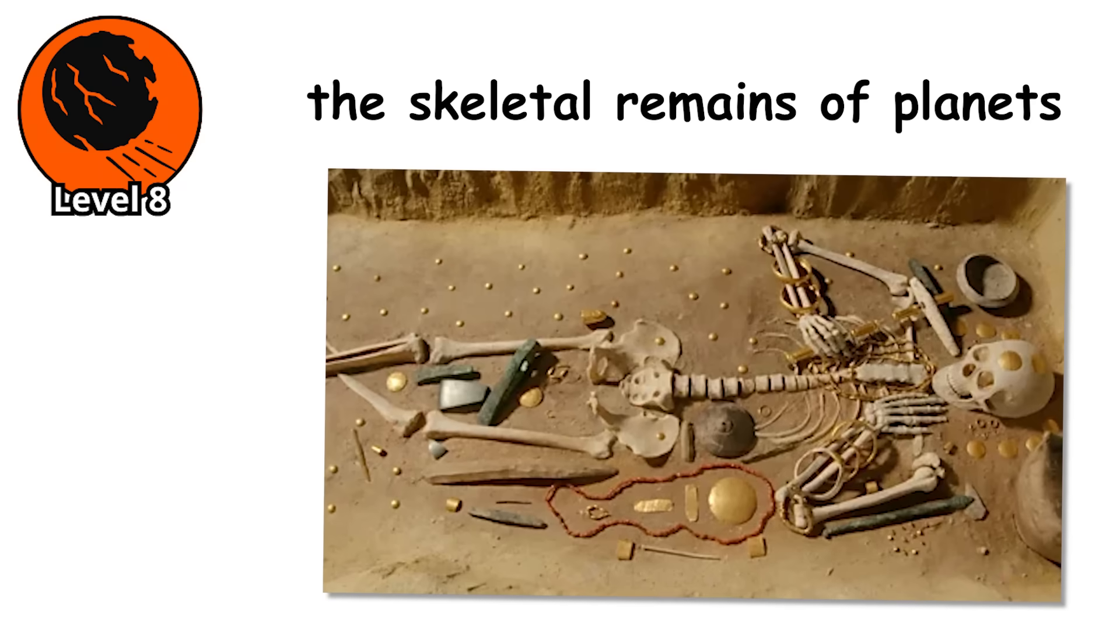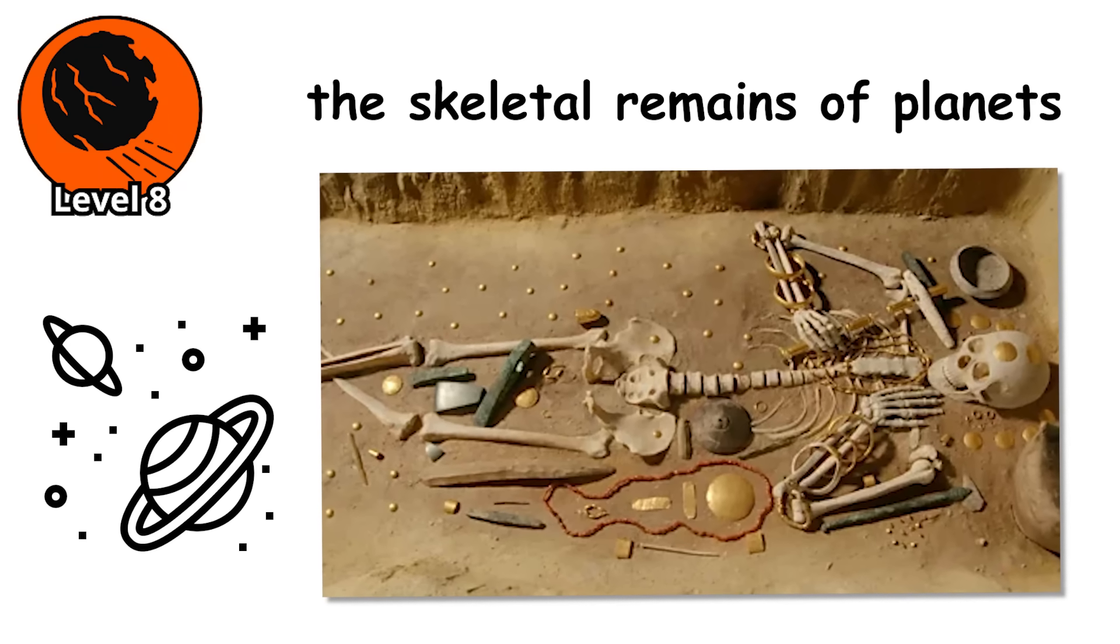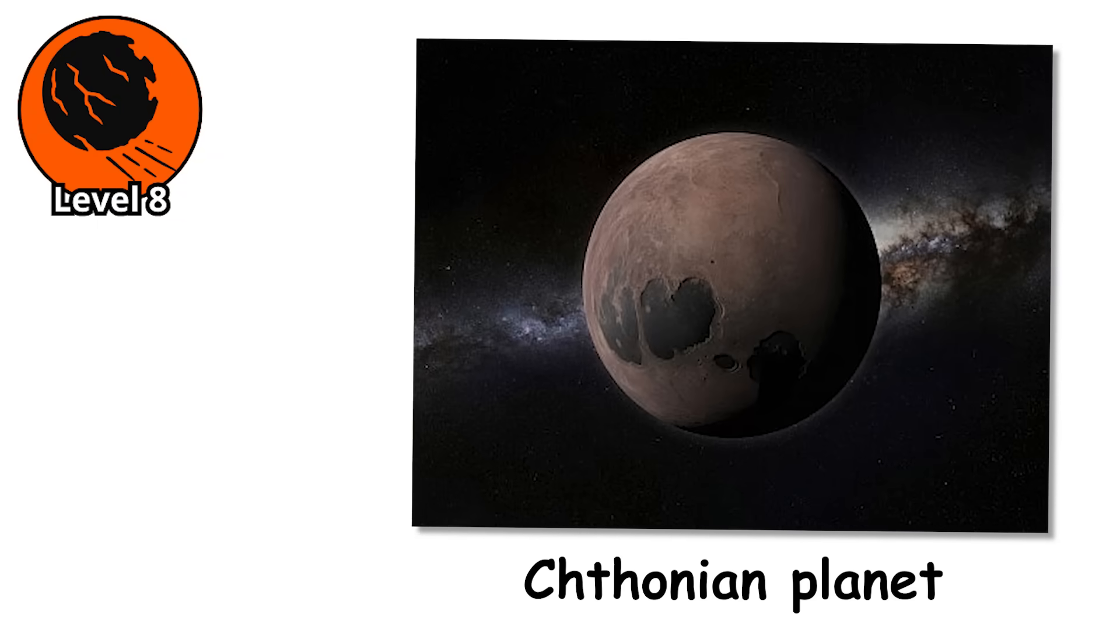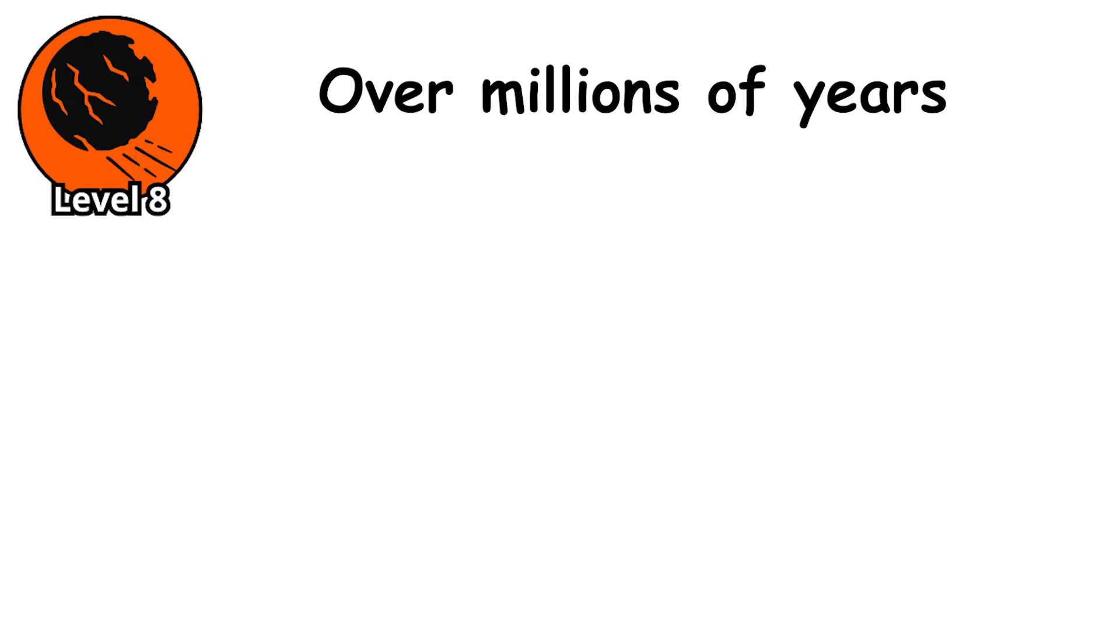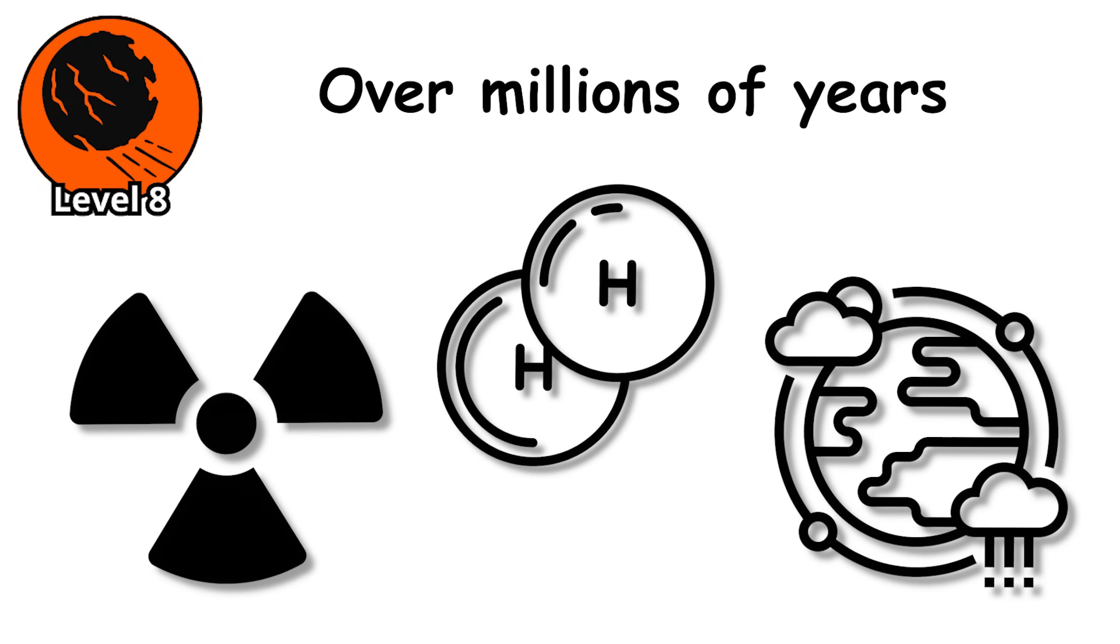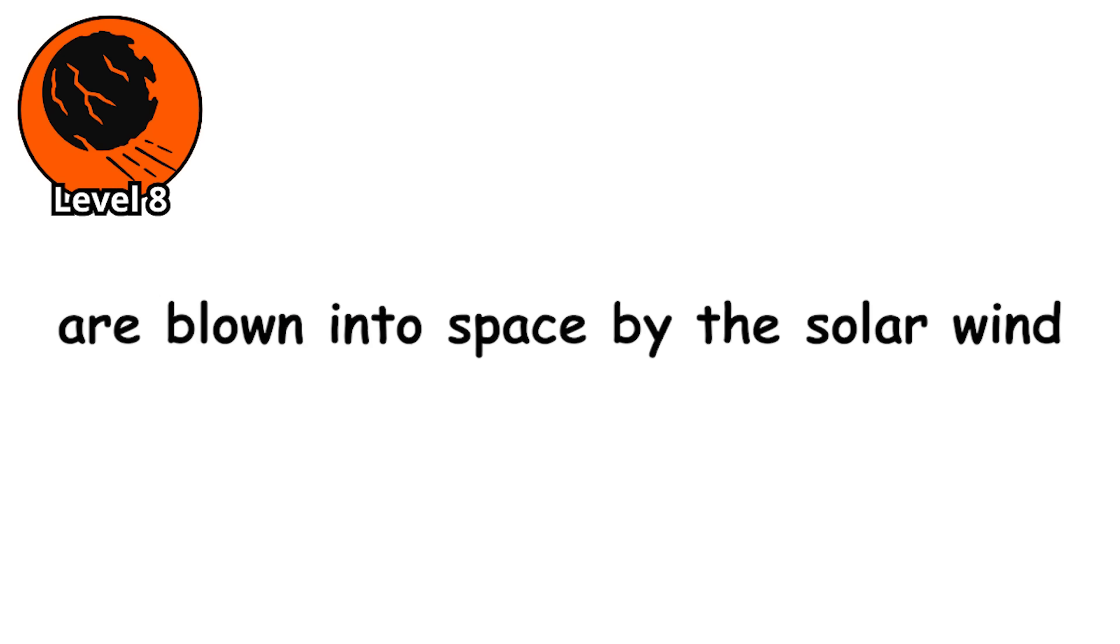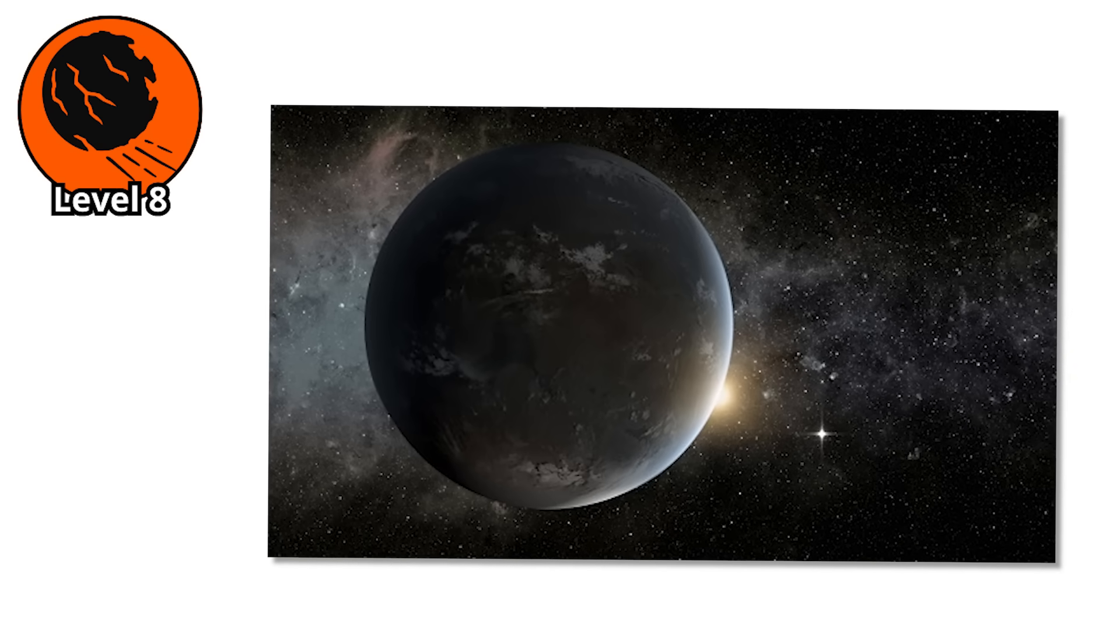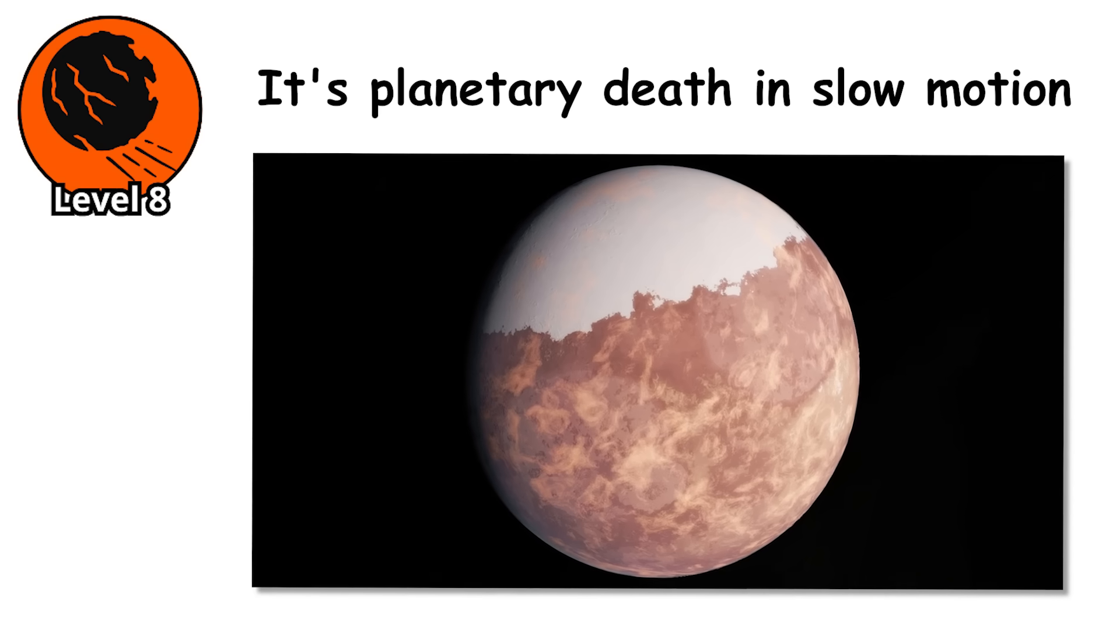Level 8. These are the skeletal remains of planets that used to be massive, but got too close to their stars and paid the ultimate price. A Chthonian planet starts life as a hot Jupiter, a gas giant orbiting dangerously close to its star. Over millions of years the intense stellar radiation strips away the outer layers of the atmosphere. The hydrogen and helium that made the planet giant are blown into space by the solar wind, peeled away layer by layer until only the dense rocky or metallic core remains. What you end up with is a super-dense, super-hot core, sometimes just a fraction of its original size, scorched and barren. It's planetary death in slow motion.